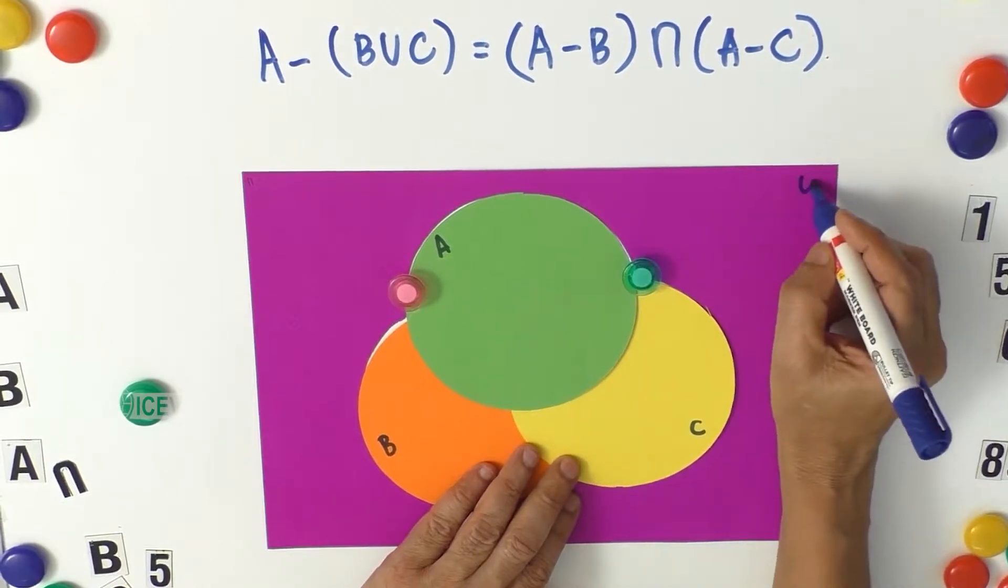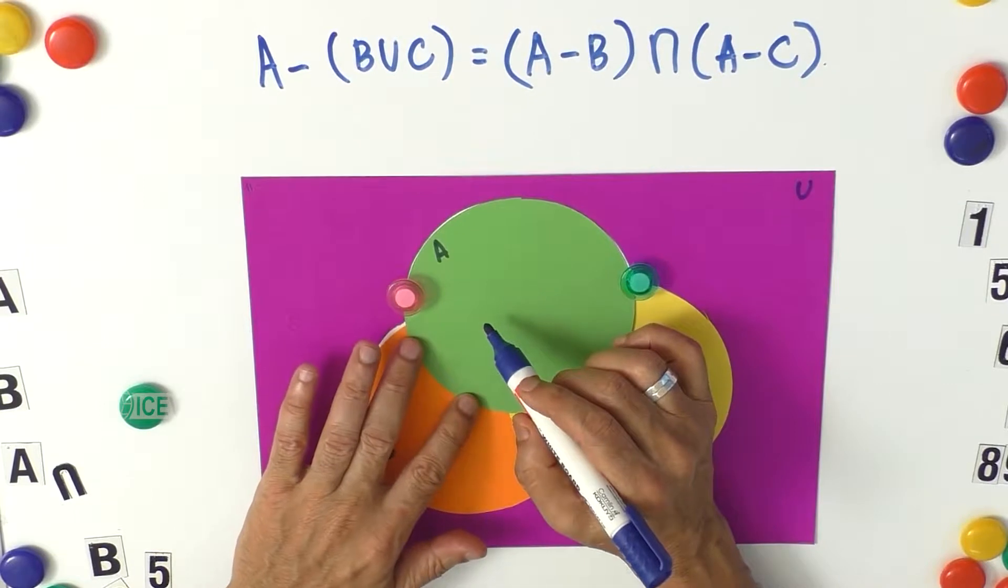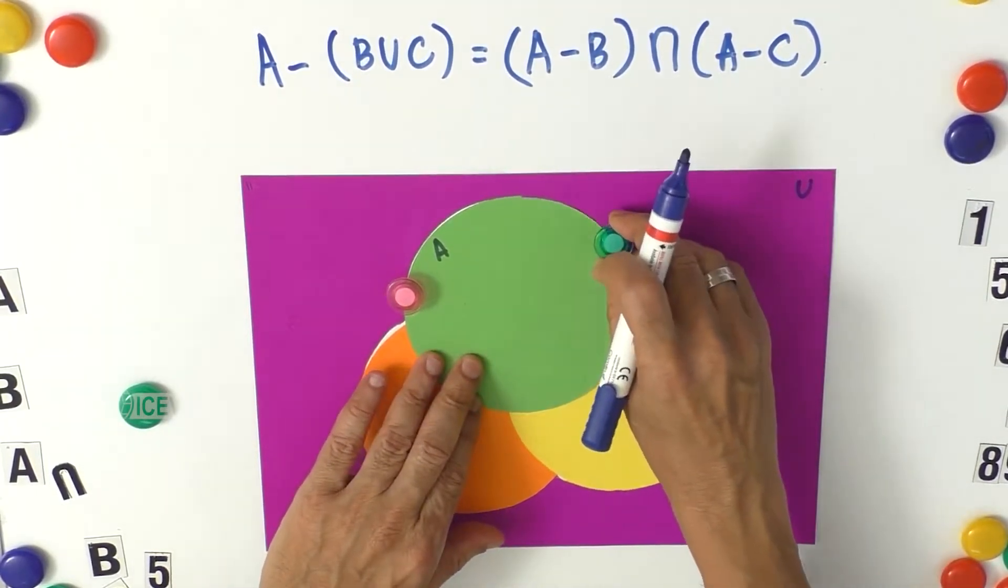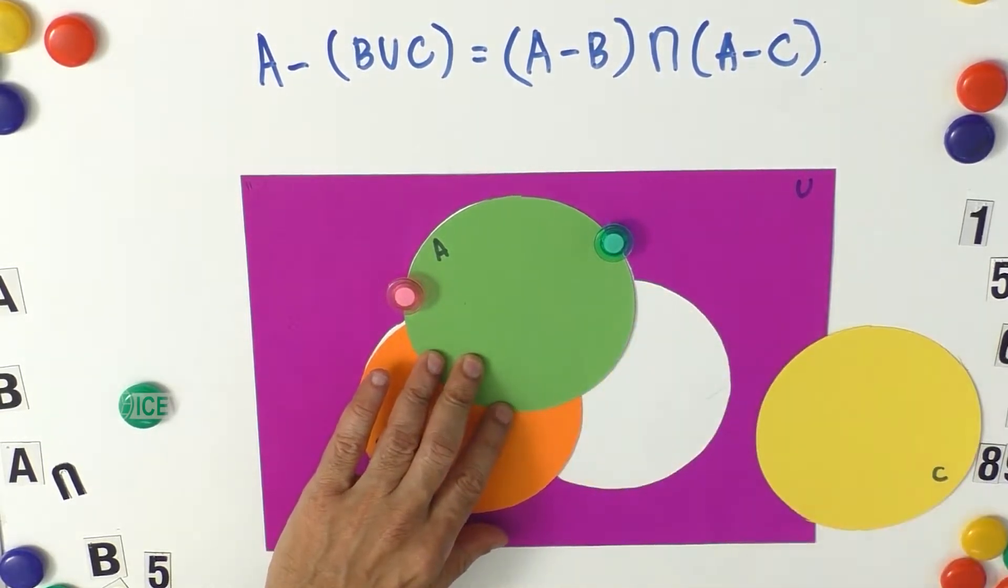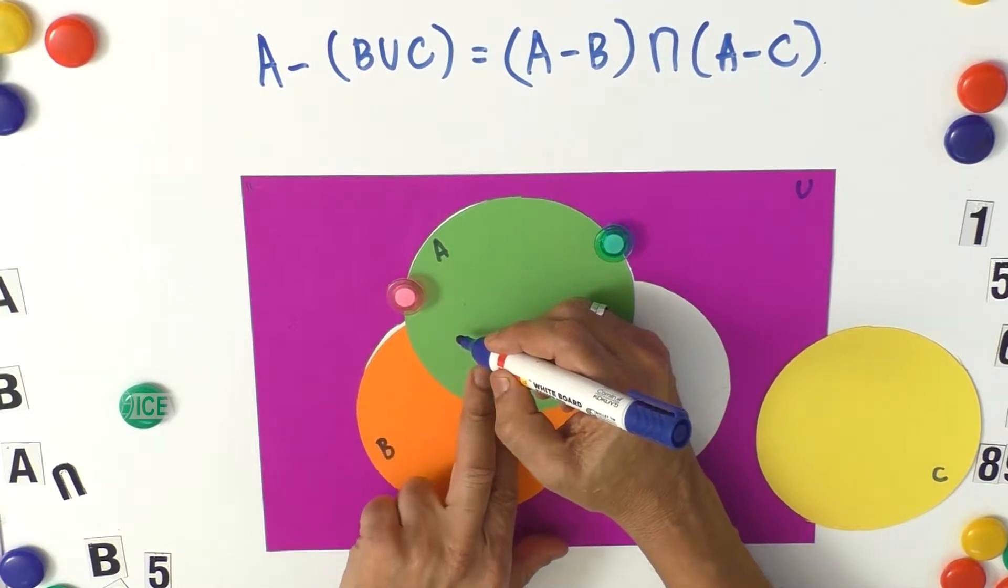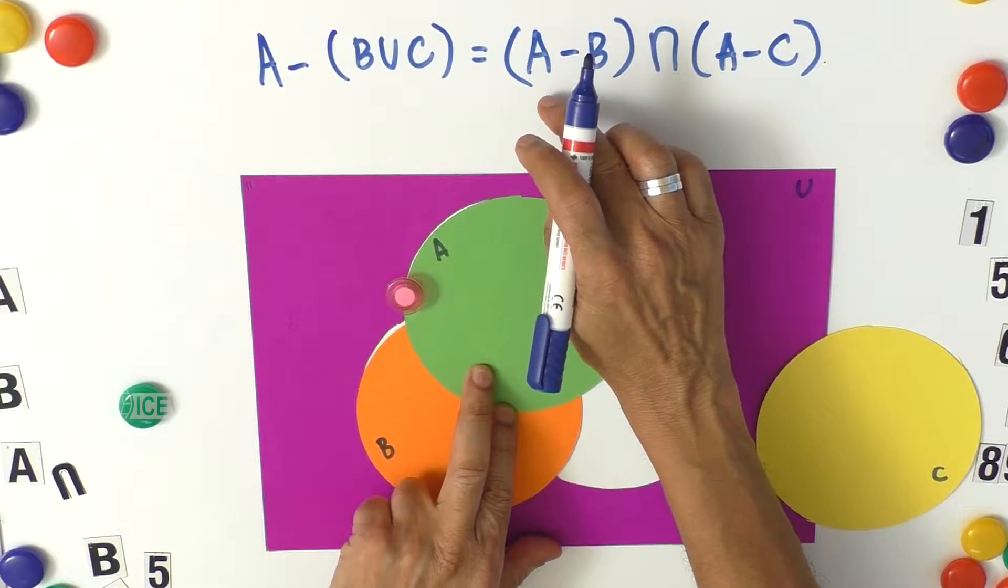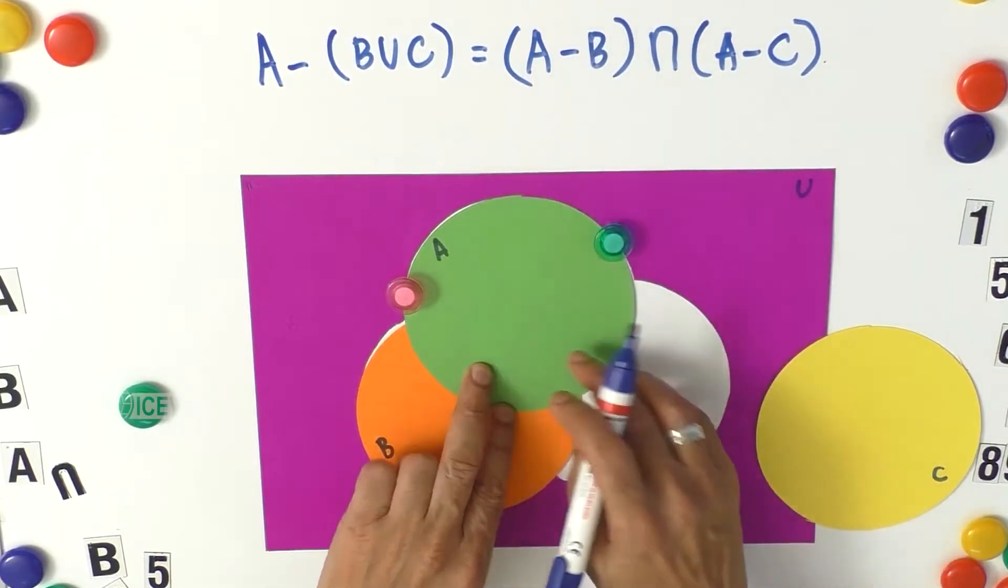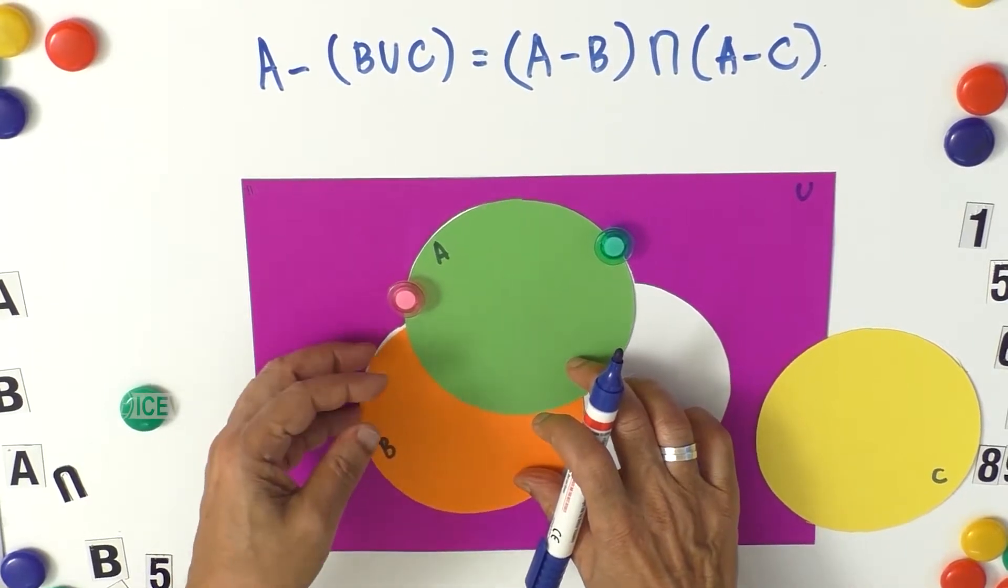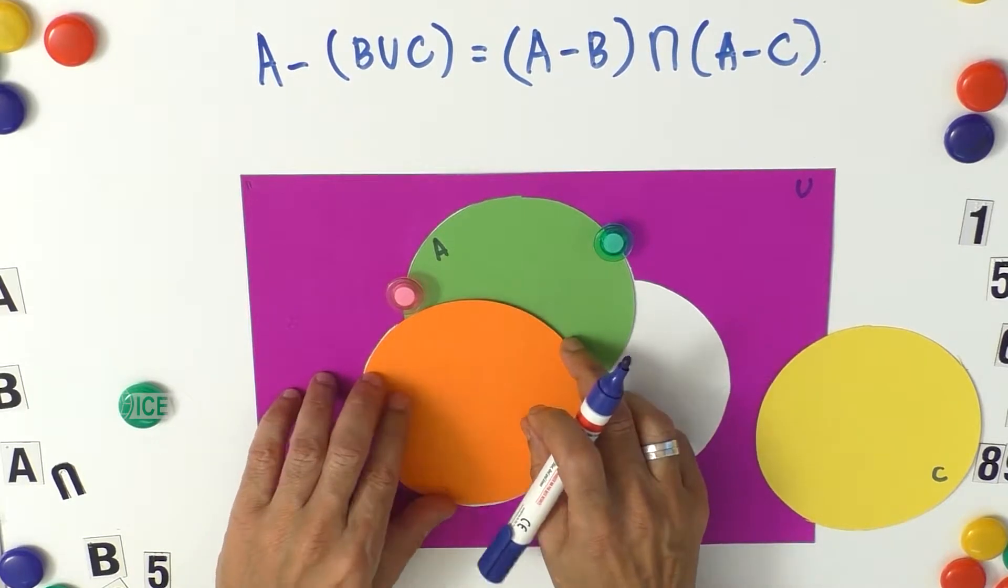Now we have the universe. Let us find out A minus B. We can take this set C away for the time being. A minus B means the objects of A not in B. Objects of A not in B. Let us put the B on top. Let the child feel this.